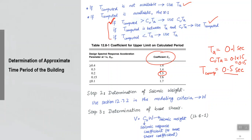Step two is to calculate the seismic weight W. We have already discussed in the modeling criteria what things should be added to calculate W. Step three is to calculate the base shear, which is the reaction of all the applied earthquake forces representing your future earthquake. The sum of those applied forces is the base shear. V equals Cs, the seismic response coefficient (also called the base shear coefficient), times the seismic weight W. Cs multiplied by W gives you the sum of all horizontal forces.